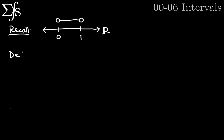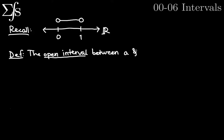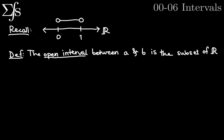So I'm going to define the open interval. This is what's called an open interval, what I'm trying to describe. The open interval between arbitrary points A and B is a subset of R — it is the subset of R — denoted with parentheses: parentheses A comma B parentheses. And it's equal to the set of all X such that A is less than X and X is less than B.